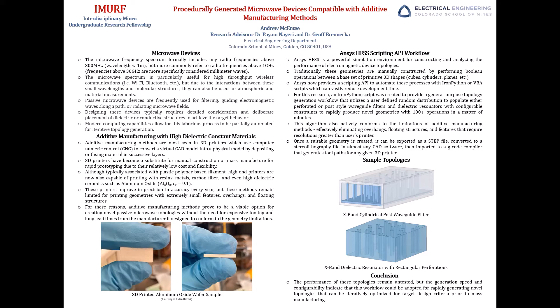And traditionally in the software, you create these geometries by manually constructing it by performing Boolean operations, such as addition and subtraction, among 3D primitive shapes, such as cubes, cylinders, and planes. However, ANSYS now has a scripting API that allows us to automate many of these processes.